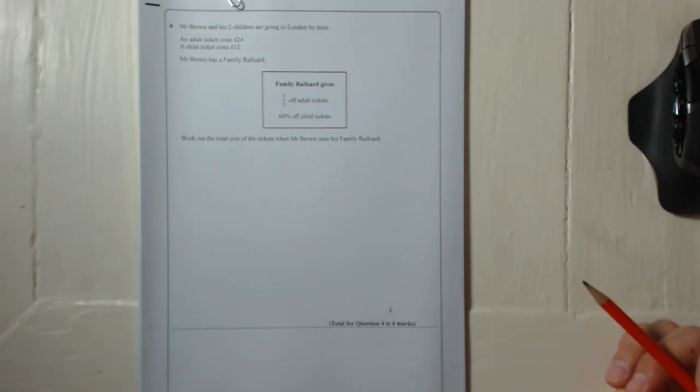Right, so there's Mr. Brown and two children. That's one adult, two children.